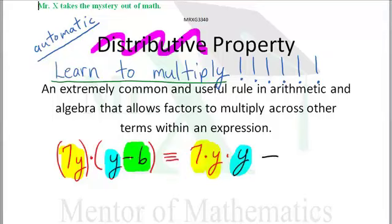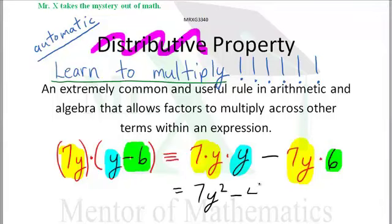And then we have 7y times 6. This is everything that's going on in my head. But I never write this. Ever. Except to explain it, what's this going to be equal to? 7y squared minus 42y.